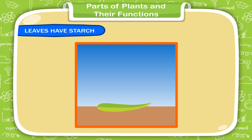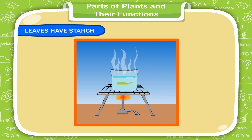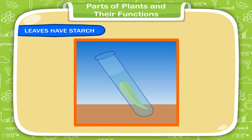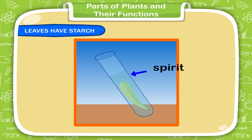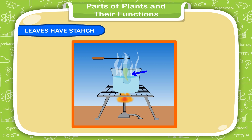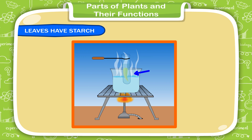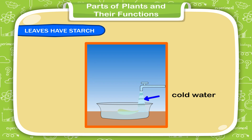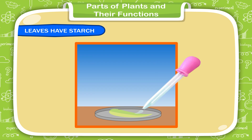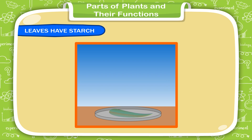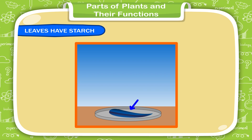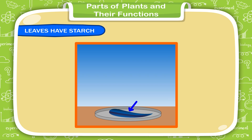Leaves have starch. Take a green leaf and boil it in a beaker filled with water for some time. Then take the leaf and place it in a test tube containing spirit. Boil the test tube in a beaker of hot water. Remember, spirit should not be heated directly on a flame as it will catch fire. Boil the leaf until the green color disappears. Now wash the leaf with cold water and pour some drops of iodine solution on the leaf. The leaf turns blue-black in color. Starch gives a blue-black color with iodine solution, showing that starch is present in the leaf.